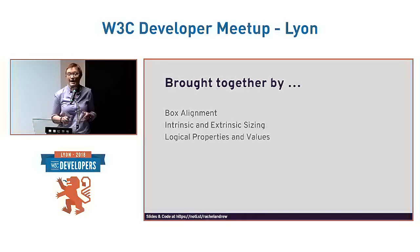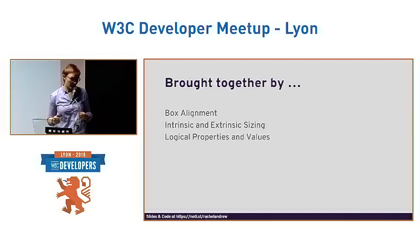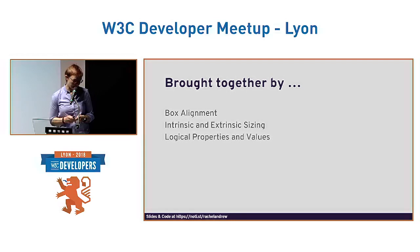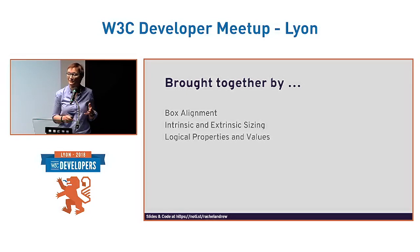In the past, layout was kind of a series of hacks — we'd worked out how to line up floats to look a bit like a grid. Our new layout systems are tied together by core specifications: box alignment, intrinsic and extrinsic sizing, and logical properties and values. These underpin the layout systems we now have, and really anything that is to come. The biggest challenge in understanding new layout specs like Flexbox and Grid isn't about understanding their individual properties — it's actually changing the way we think about layout.